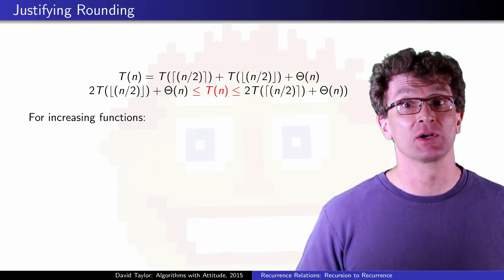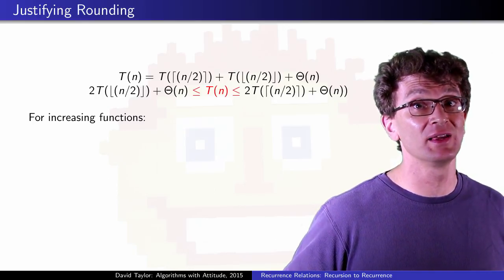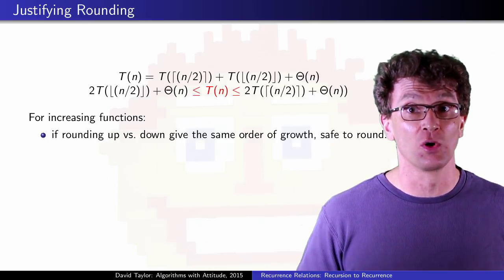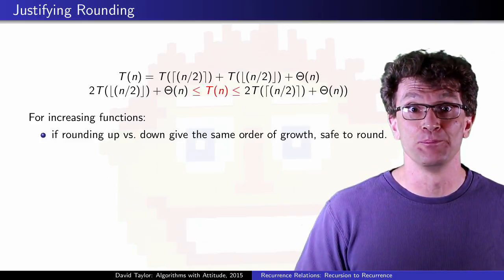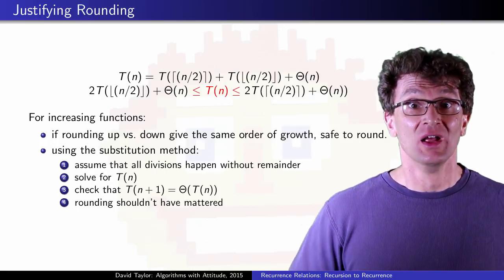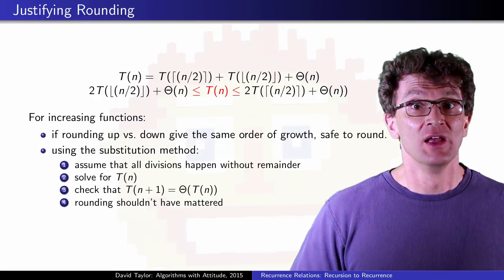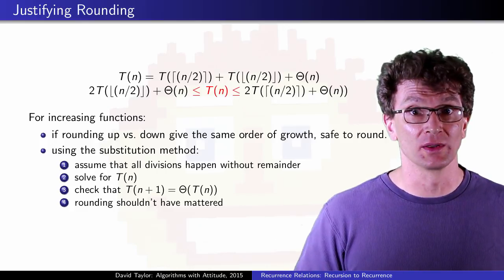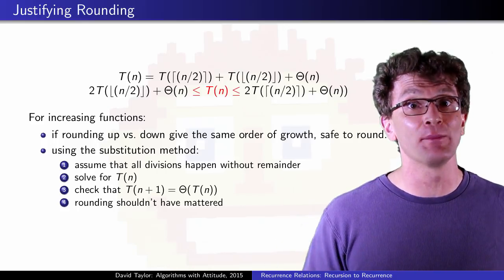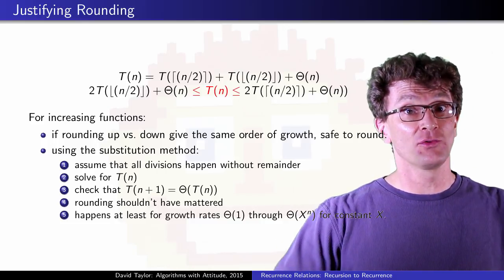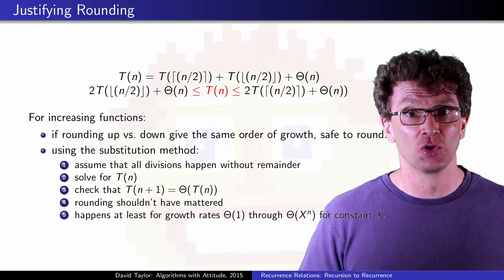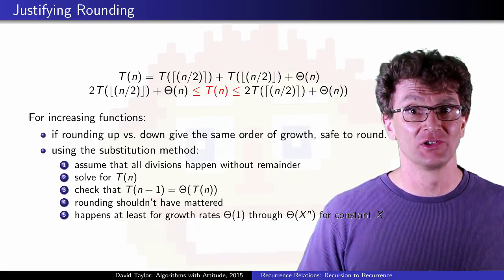More generally, for increasing functions, if rounding up vs. down gives the same order of growth, it's safe to round using the substitution method. Assume that all divisions happen without remainder, solve for T(n), and check that T(n+1) = Θ(T(n)). If you get an answer that doesn't grow too quickly, then rounding shouldn't have mattered. They will each use an inductive step with the same order of growth rates Θ(x^k) for constant k. This happens at least for constant through regular exponential. It doesn't happen to be true for some really fast growing functions like n factorial.